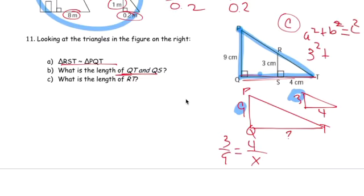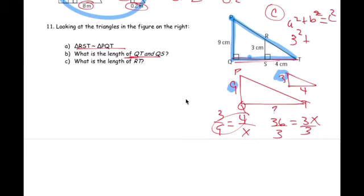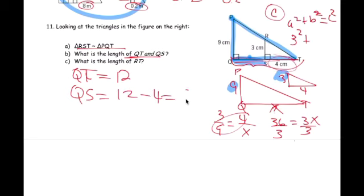3 over 9 equals to 4 over what? So, 36 equals to 3x. Divide by 3. x, the missing length right here. x represents q to t. This is x. So q to t equals 12. If this whole thing is 12, then q to s, right here, q to s is 12 minus this 4, which is 8 meters.